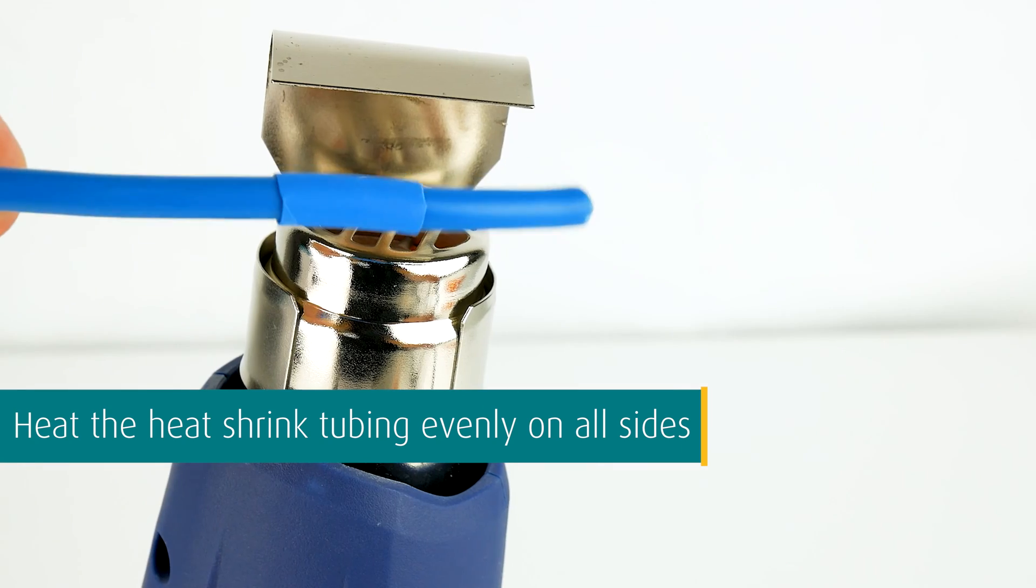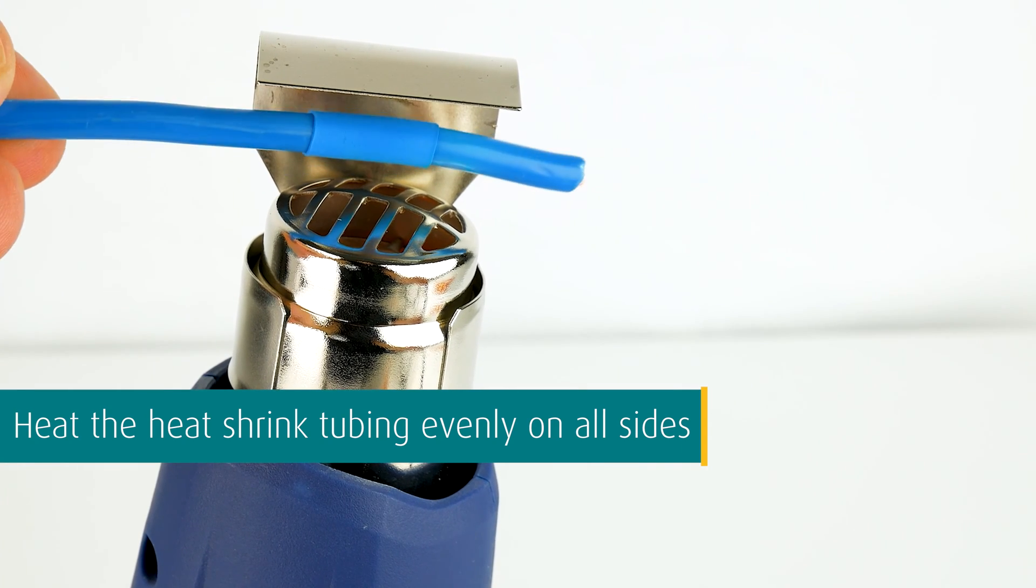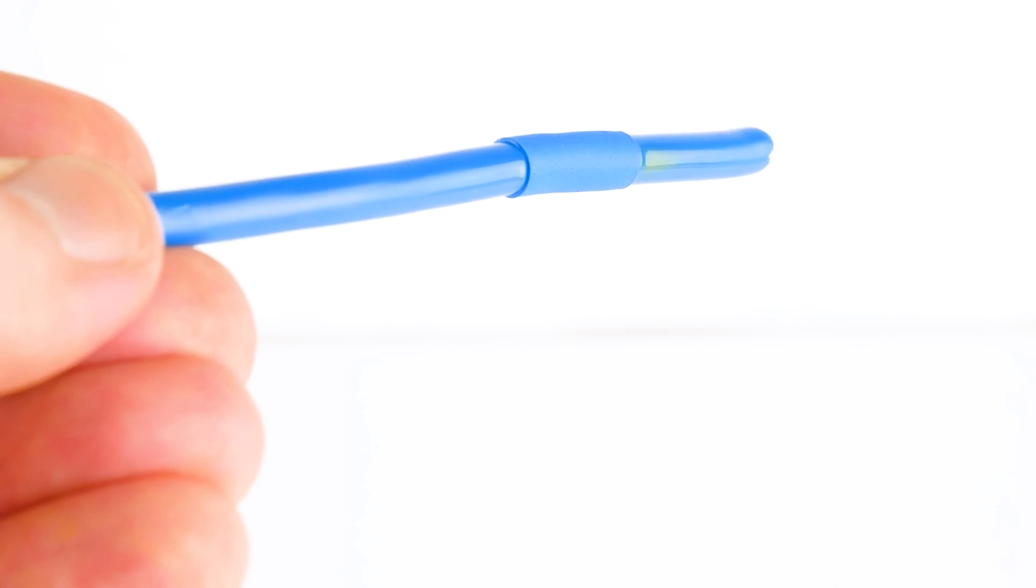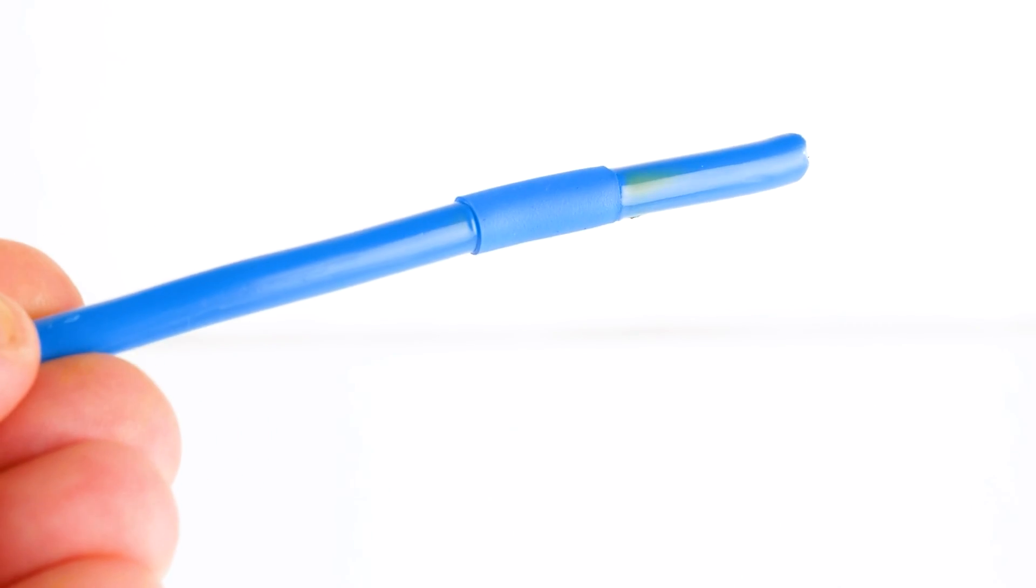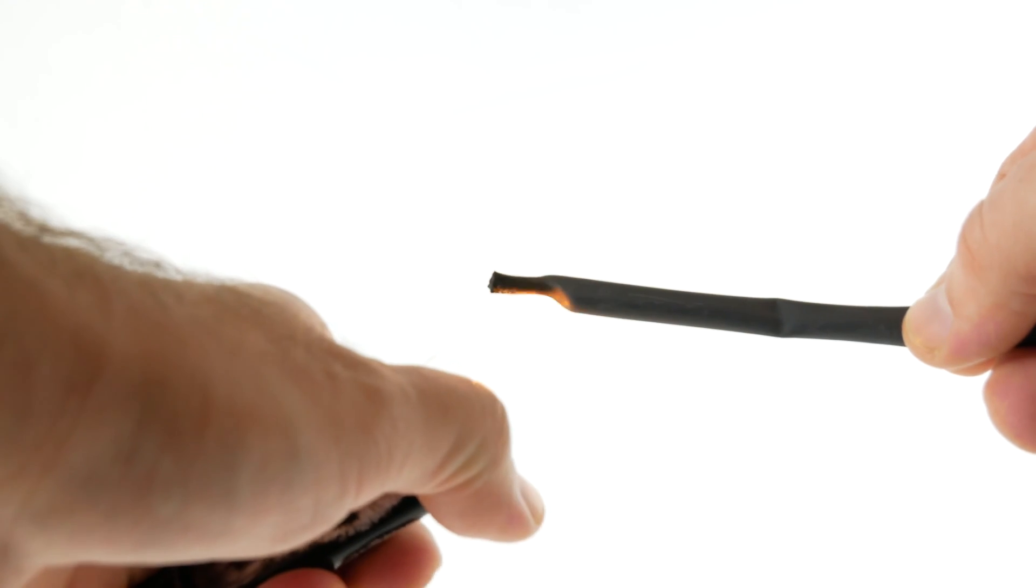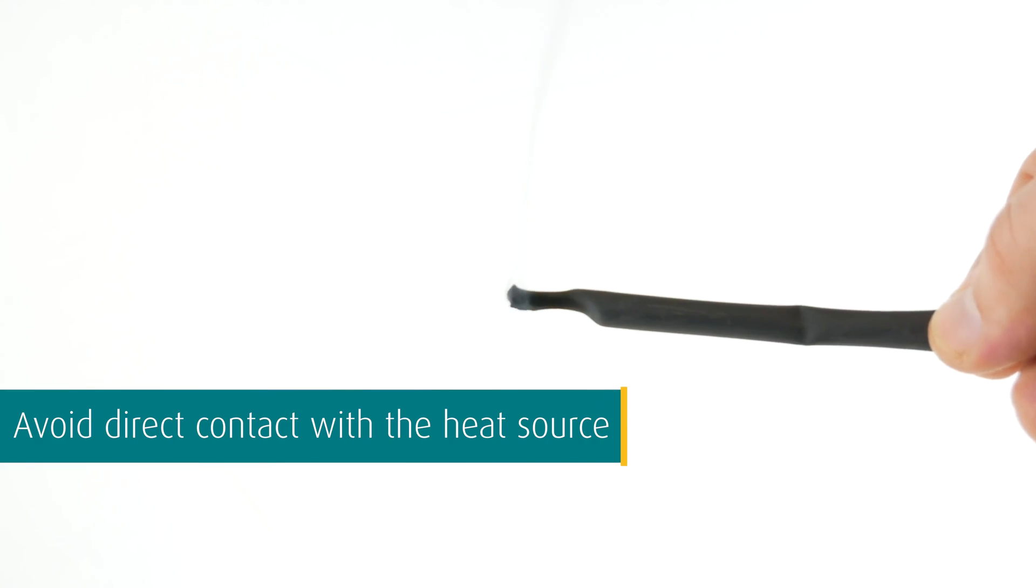Heat the heat shrink tubing evenly on all sides until it shrinks tightly around the cable. If electricity is available, we recommend the use of a heat gun. If there is no power supply nearby, you can use a mobile gas burner. Avoid direct contact with the heat source.